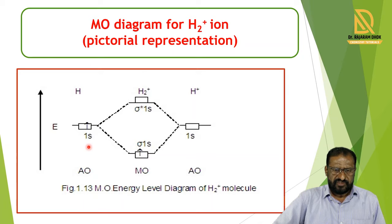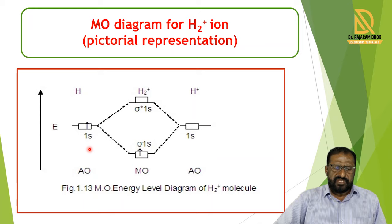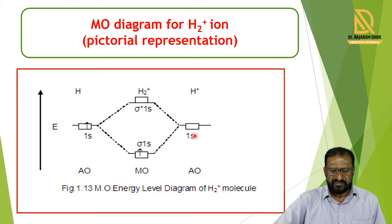In the H2 plus Ion pictorial diagram, there are two atomic orbitals. For the first hydrogen atom there is one s orbital, and for the second hydrogen atom there is one s orbital. In the first hydrogen atom's atomic orbital, one electron is present, shown in the square. In the second hydrogen atom, that is the H plus ion, there is no electron because one electron has been lost from that atomic orbital.